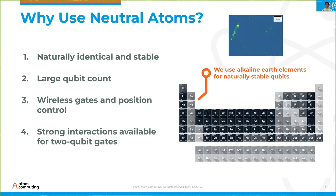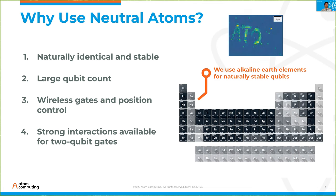Reason number four is that we have strong interactions at our disposal for fast two-qubit gates, and those are based on the Rydberg interaction. Importantly, those interactions can be turned off very strongly when we don't want them, which allows us to go back to reason number one where our qubits are very stable.